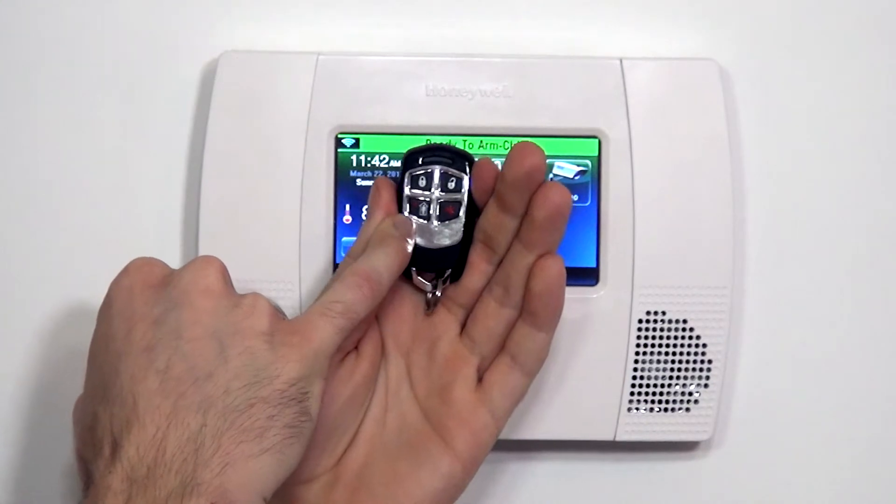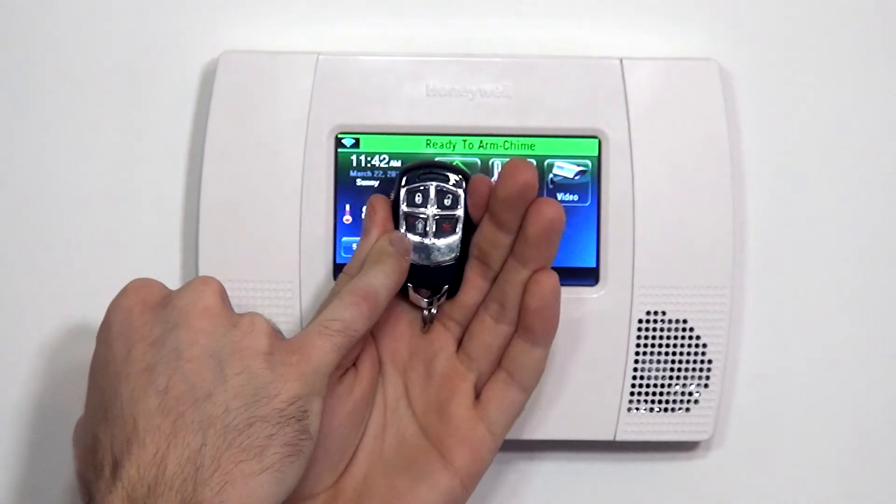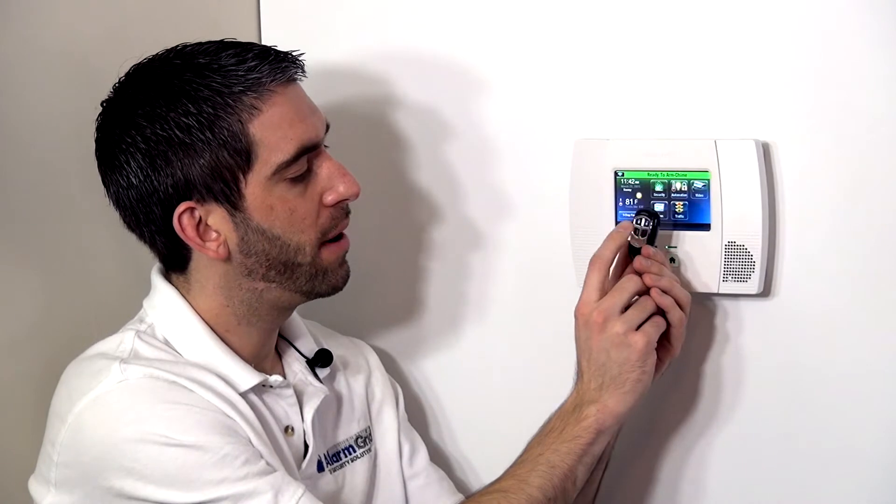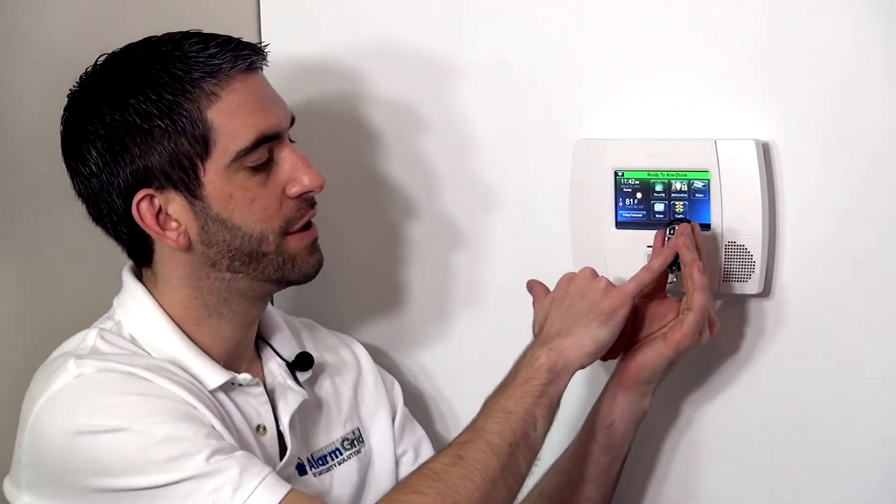The picture of the guy in the home would be our arm stay option. That means our motions are turned off, but our doors, windows, and glass breaks are active. And then finally, we have button number four, which we can select to do any function we would like. It can be a panic alarm, an activation of an automation scene or rule, or control the 5877 garage door controller. So you have a lot of options for using this button.